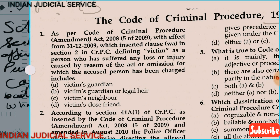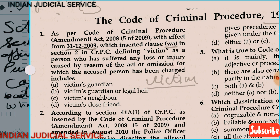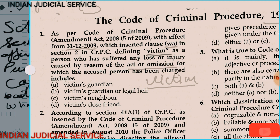Question 1: As per the Code of Criminal Procedure Amendment Act 2008, with effect from 31st December 2009, which inserted clause (wa), the definition of 'victim' was provided. Section 2 of CrPC defines 'victim' as a person who has suffered any loss or injury caused by reason of the act or omission for which the accused has been charged, including the victim's guardian and legal heirs. The answer is victim's guardian and legal heirs — not neighbor or close friend.